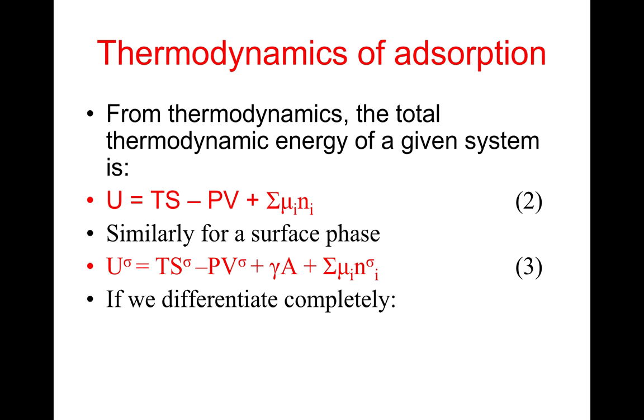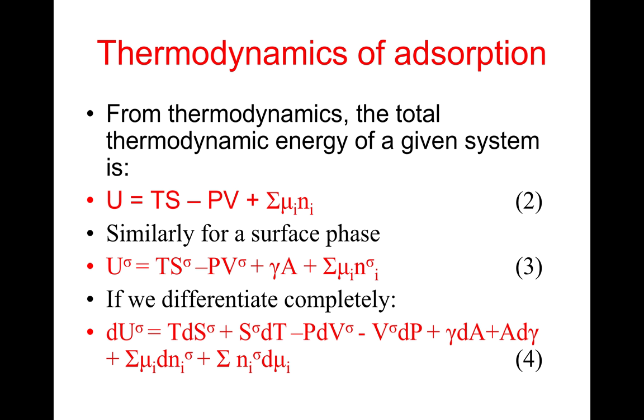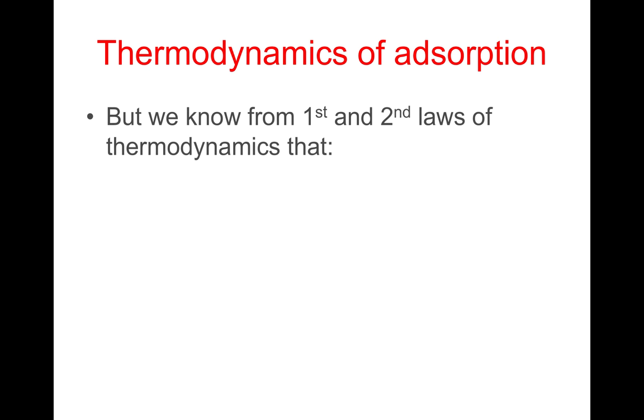If we differentiate this completely, we will get dU^sigma = T dS^sigma + S^sigma dT - P dV^sigma - V^sigma dP + γ dA + A dγ + Σμ_i dn_i^sigma + Σn_i^sigma dμ_i. That's equation 4. But we know from first and second laws of thermodynamics that dU is usually equal to T dS - P dV + Σμ_i dn_i.